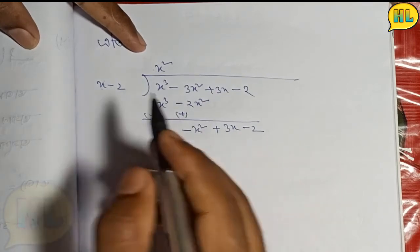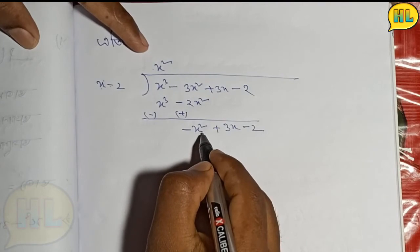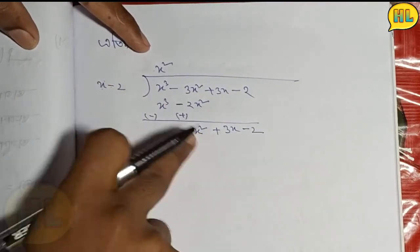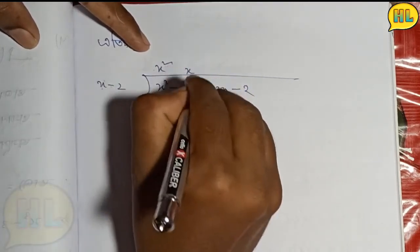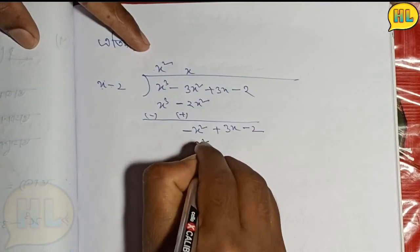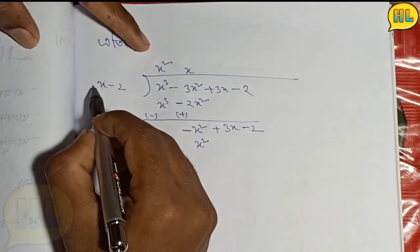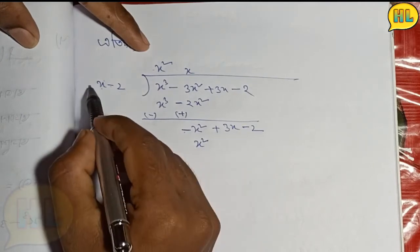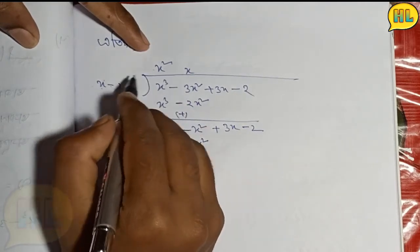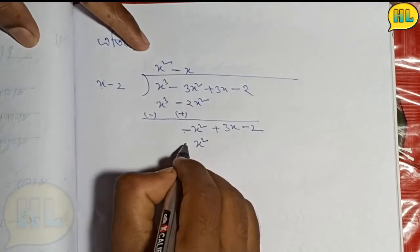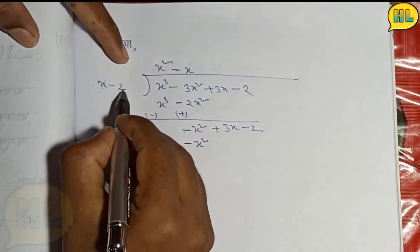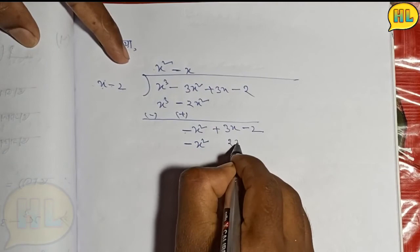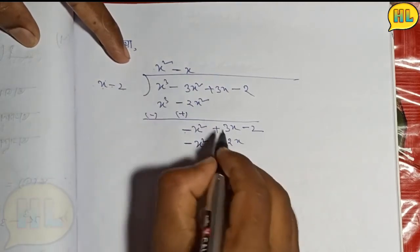So these cancel out. X times x square equals x cube. Plus plus equals plus, minus minus equals plus. Minus plus equals minus, plus minus equals minus.